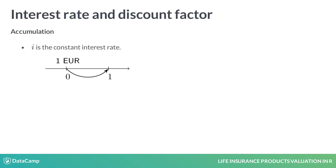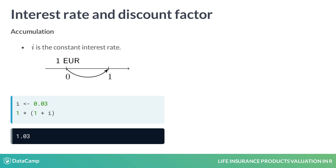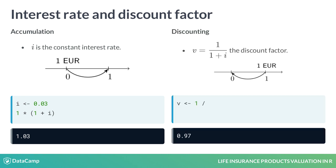Let's assume a constant interest rate, say i. This is the interest earned over one time period. The timeline on the left illustrates how one euro at time zero grows to 1.03 euro at time one. On the right side, the discount factor v describes the inverse operation: one euro at time one discounts to one over one plus i euro, or v euro at time zero — that's 0.97 euro in our example.